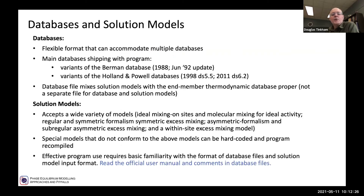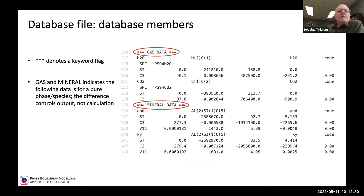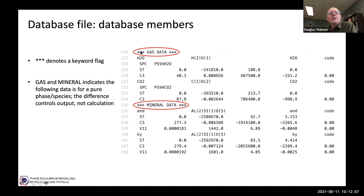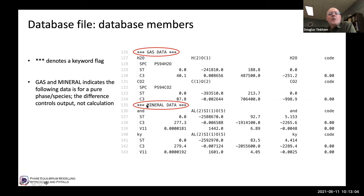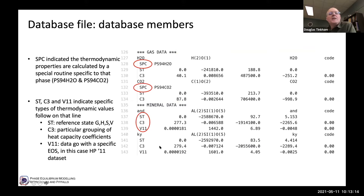Read the user manual — I think it's very good. The database contains end-member thermodynamic data, in this case from the Holland and Powell database. You'll see flags with three stars followed by keywords: 'gas data' and 'mineral data'. These keywords control how the program reports properties of those phases. The flags that actually determine how thermodynamics are calculated for each phase are codes like SPC (special internal fluid routine, Sterner 1994, used by the Holland and Powell 2011 database), ST (standard state properties — enthalpy of formation, entropy, and volume at reference conditions), and C, C1, C2, C3, C4 for heat capacity coefficients.